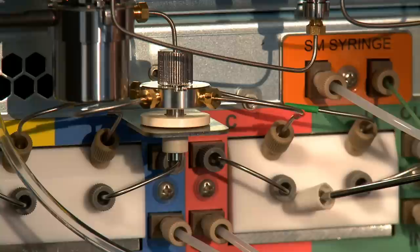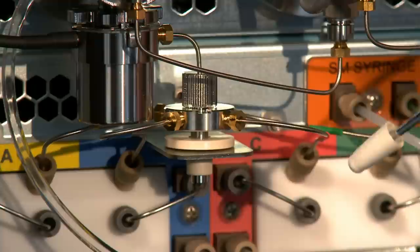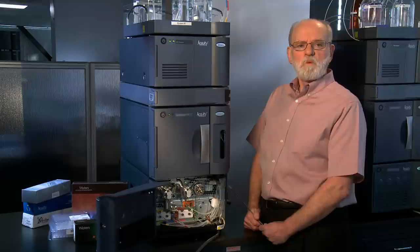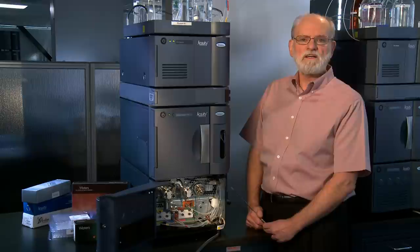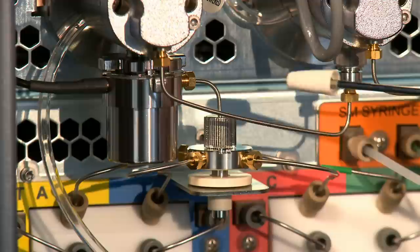The flow comes out of the vacuum degasser into the gradient proportioning valve and out to a manifold where the four solvents meet for the first time. The gradient proportioning valves open in sequence where the proportion of time that each valve is open corresponds to the percentage of that solvent specified in the gradient table.